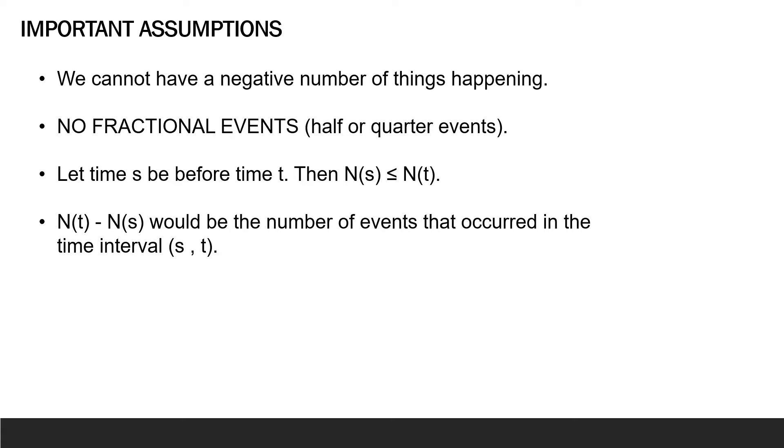But, of course, there are some important assumptions we make about our N(t), our counting process. First, we cannot have a negative number of things happening. We either have no events that have happened or some positive number. So in notation, N(t) must be greater than or equal to zero.